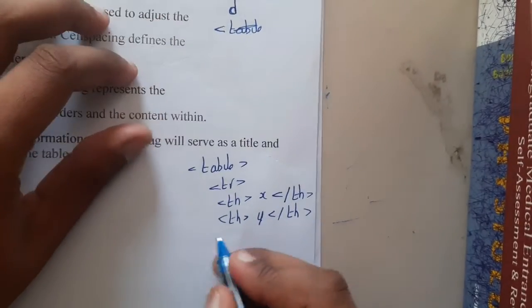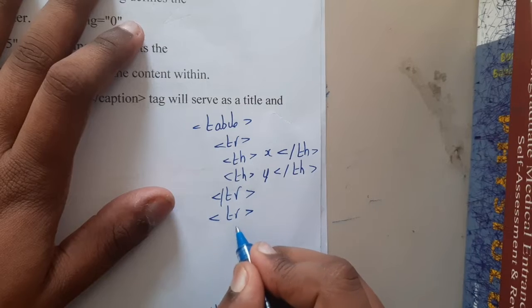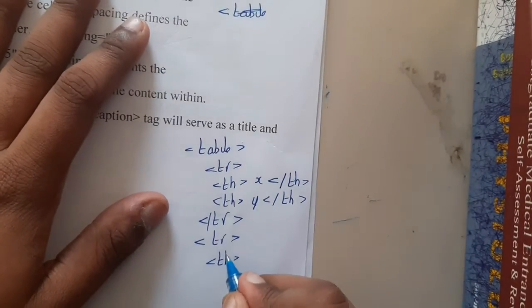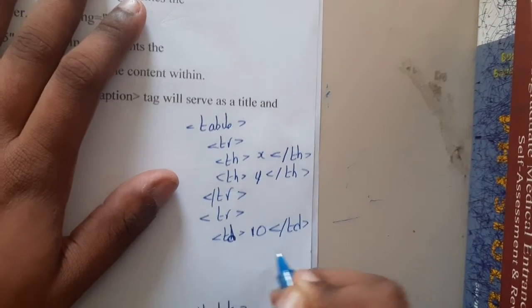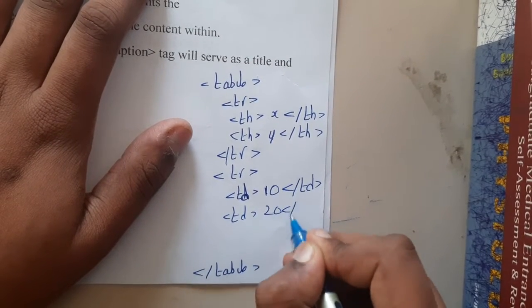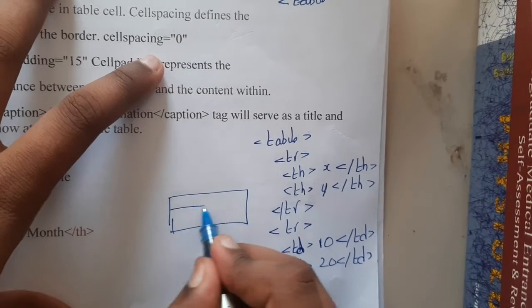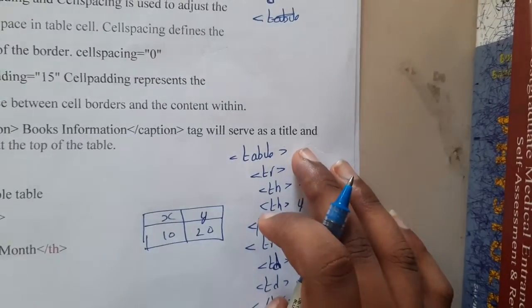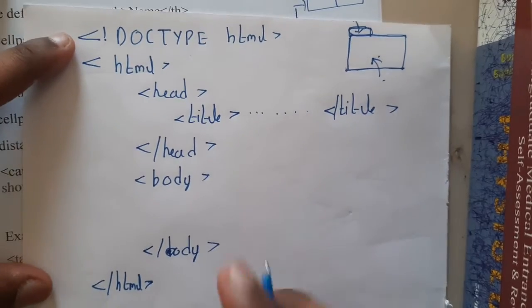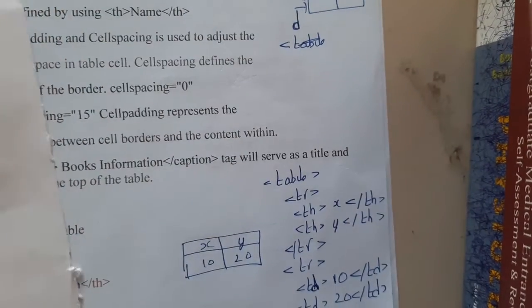Now we are done with the first row, so we close it and move to the second row. In the second row, instead of table heading (th) we write table data (td). Assume the first data value is 10, so we open td, write 10, and close td. Then we open td again, write 20, and close td. Then we close the row. In this small code I made a table with X and Y as columns with values 10 and 20. Remember to place this code inside the boilerplate HTML — inside the body tag.